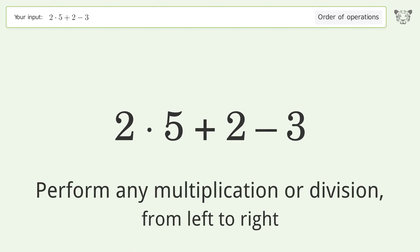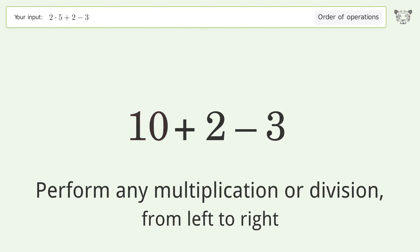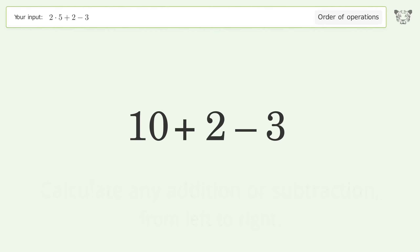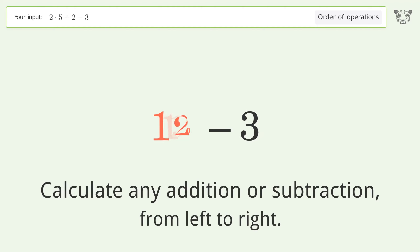First, perform any multiplication or division from left to right: 2 times 5 equals 10. Then, calculate any addition or subtraction from left to right: 10 plus 2 equals 12.